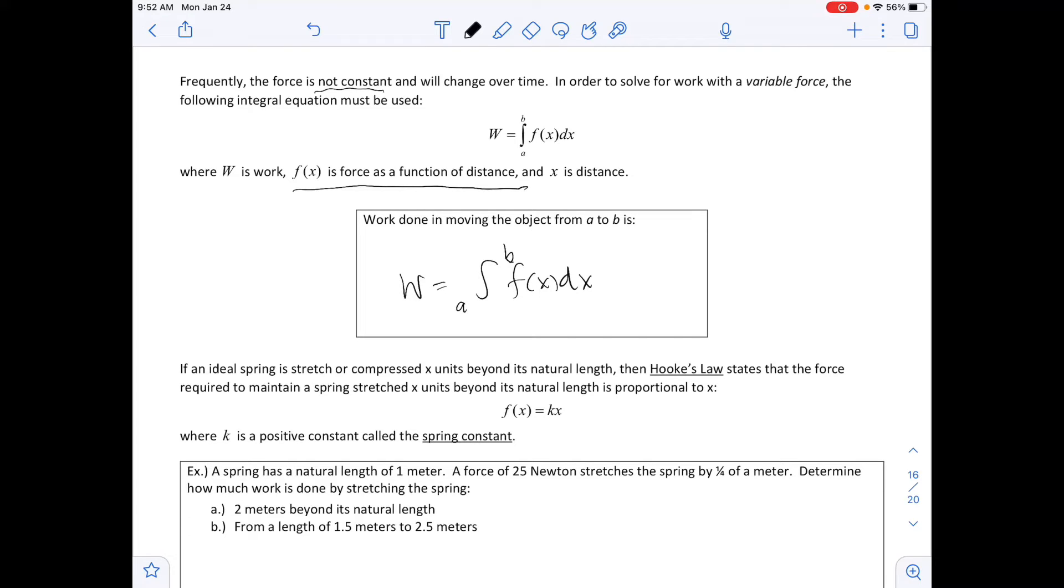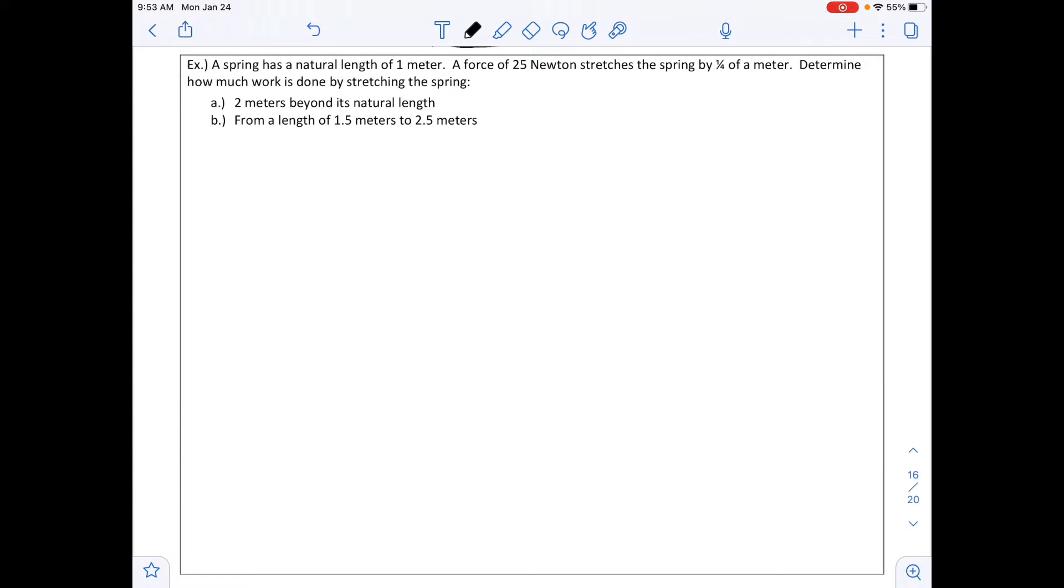If an ideal spring is stretched or compressed x units beyond its natural length, then by Hooke's law, it states that the force required to maintain a spring stretched x units beyond its natural length is proportional to x. So f of x equals kx, where k is a positive constant called our spring constant. The example below deals with springs. I'm going to circle this example and we will look at this one together in class.